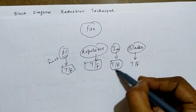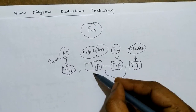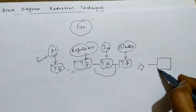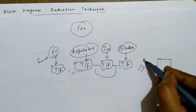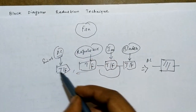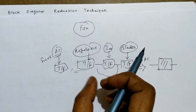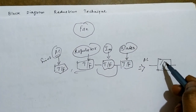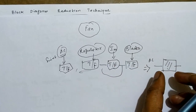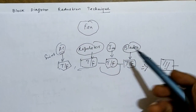These components are connected in some manner and are reduced into a single block, in which the input is the AC supply and the output is some rotation or speed. The entire electric fan's individual transfer functions are combined together to form a single system. That is called block diagram reduction technique — how the blocks are reduced to form a single block.